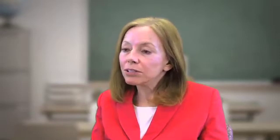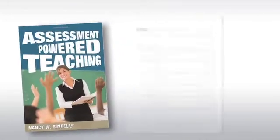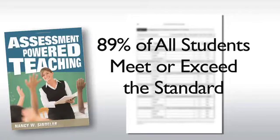The example I give in the book deals with a U.S. history class where one of the standards students are supposed to meet is to analyze historical documents. When you look at the non-disaggregated data — on a classroom test — it shows that 89% of the students actually meet this standard.